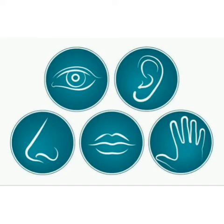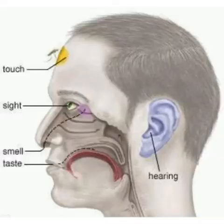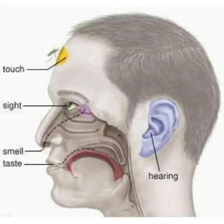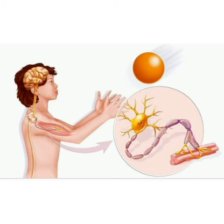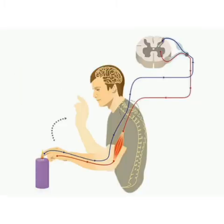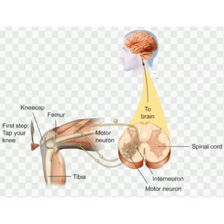The feelings felt by our sense organs — like sight, sound, smell, taste, pain, heat, and cold — are all taken through sensory nerves to the brain. The brain controls our muscles through motor nerves. Brain sends signals through motor nerves to instruct our muscles to expand or contract to cause movement.